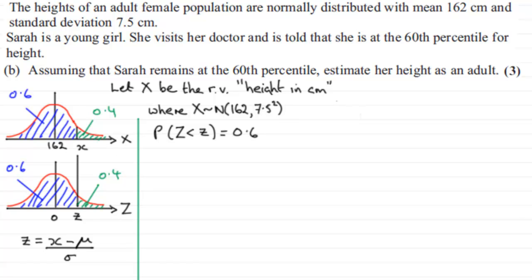Or you could say the probability of being more than this z value, same thing basically, being more than z has got to equal 0.4.